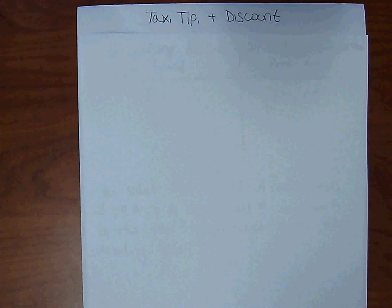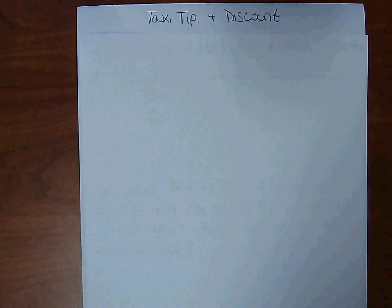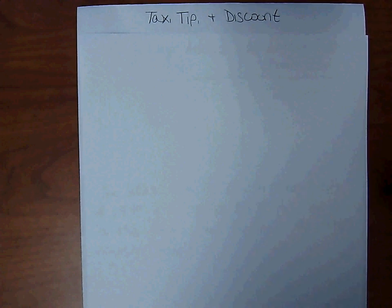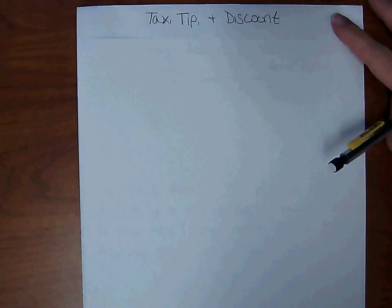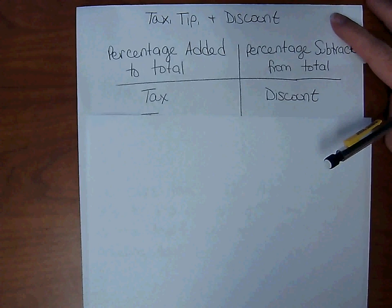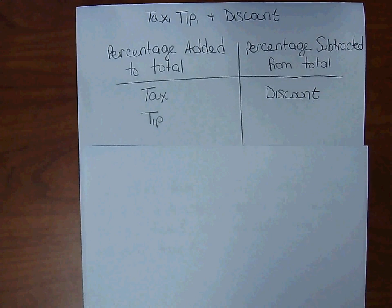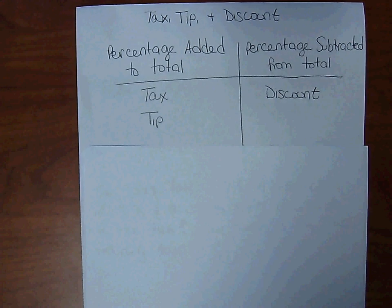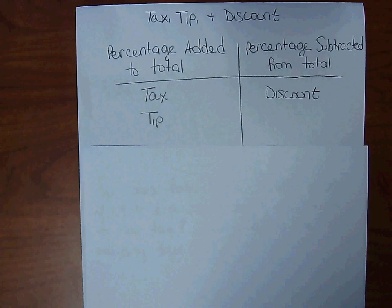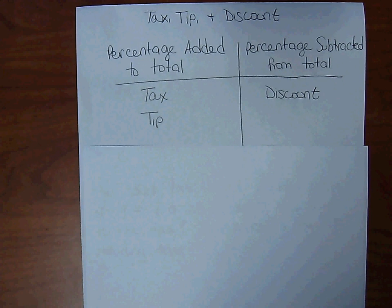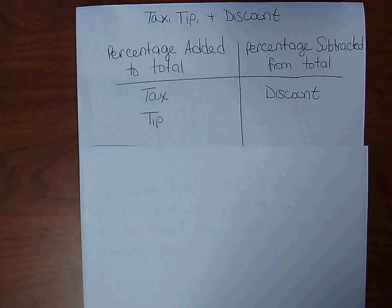Tax, tip, and discount. With tax, tip, and discount, you have to understand that tax and tip are percentages that are being added to the total, while a discount is a percentage that is subtracted from the total.